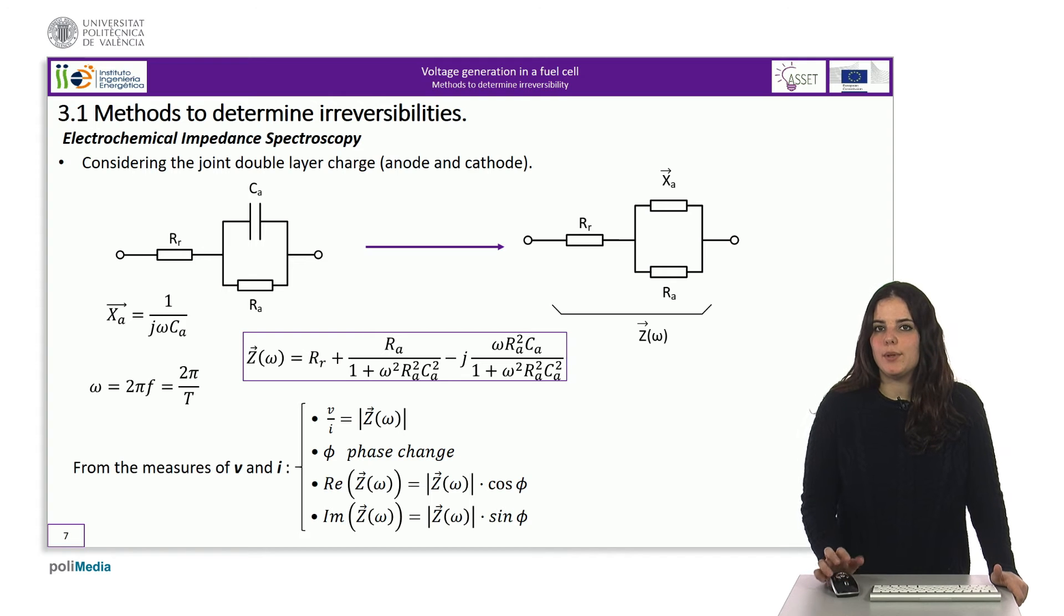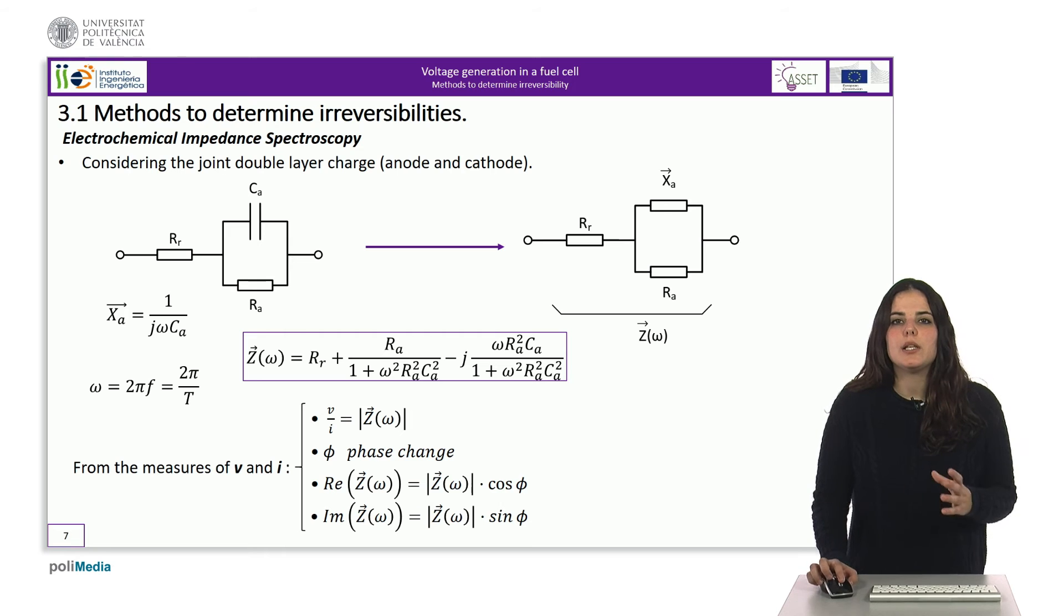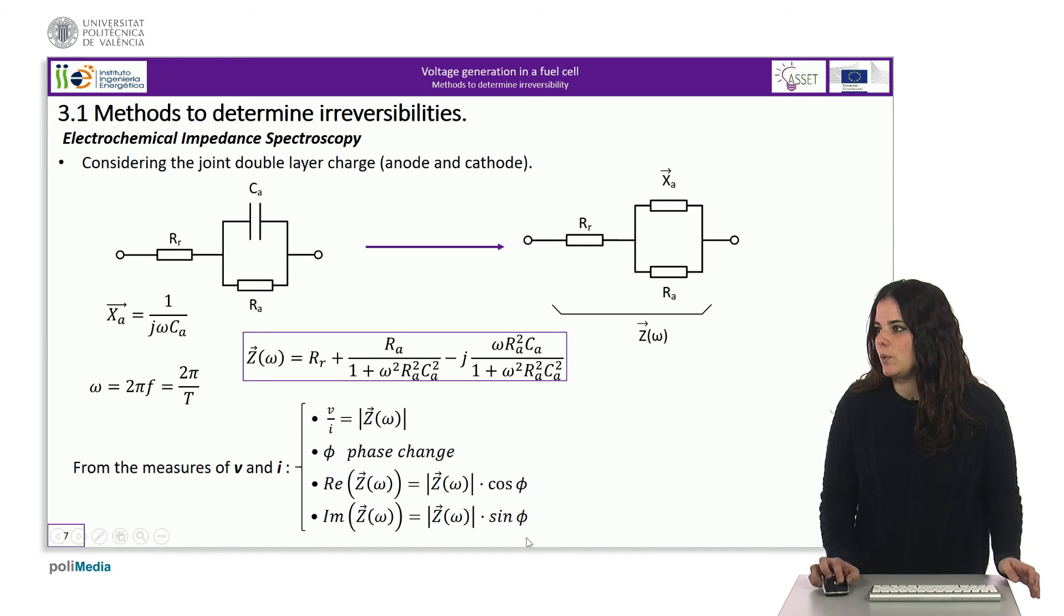If we consider the double loaded layer of the anode and the cathode together, we can continue to use the previous model. Taking into account the frequency behavior of the capacitive impedance, it is easy to deduce the total impedance calculation from the Z omega association, which will have a real part and an imaginary part. From the measurement made on voltage and current, the parameters shown can be obtained. From the relationship between amplitudes, we can obtain the modulus of the impedance, and knowing the phase and the modulus, the real part of the impedance and the imaginary part can be calculated.